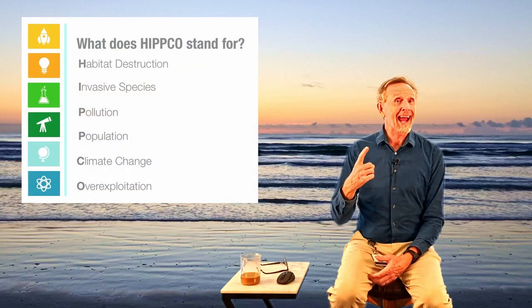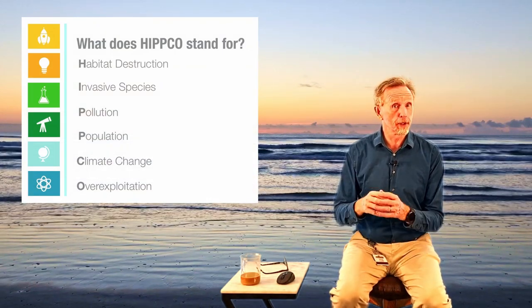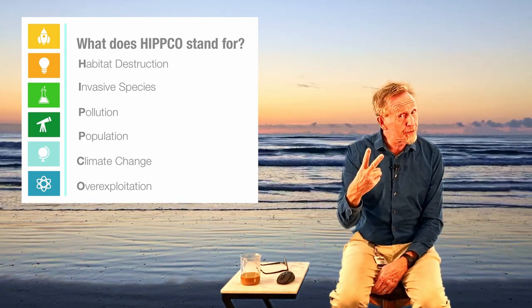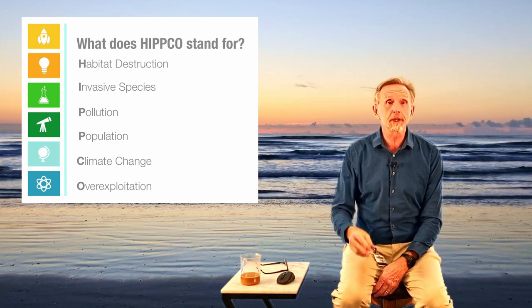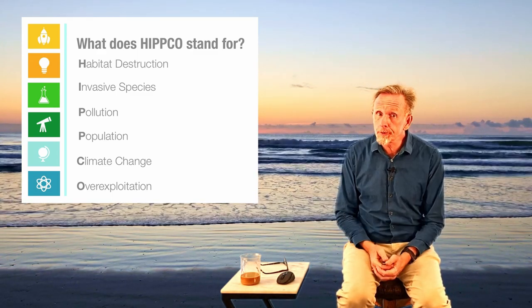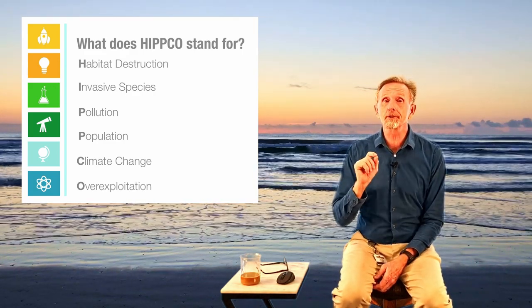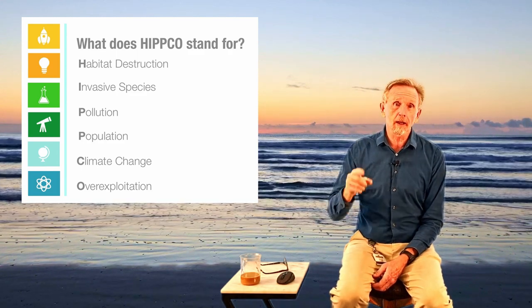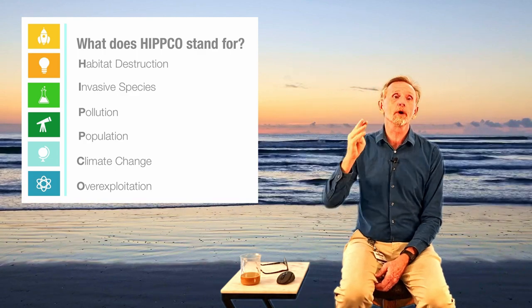When we look at threats to aquatic biodiversity, whether it's terrestrial or aquatic, it's HIPCO. Habitat loss — a lot of times because of human population growth. H: habitat loss. Invasive species moving into areas. Pollution, because population growth tends to spur pollution as well as habitat loss. Then climate change and over-exploitation. Remember HIPCO: Habitat loss, Invasive species, Pollution, Population growth, Climate change, and Over-exploitation. These are the primary reasons for virtually any kind of threat, specifically to our aquatic ecosystems.